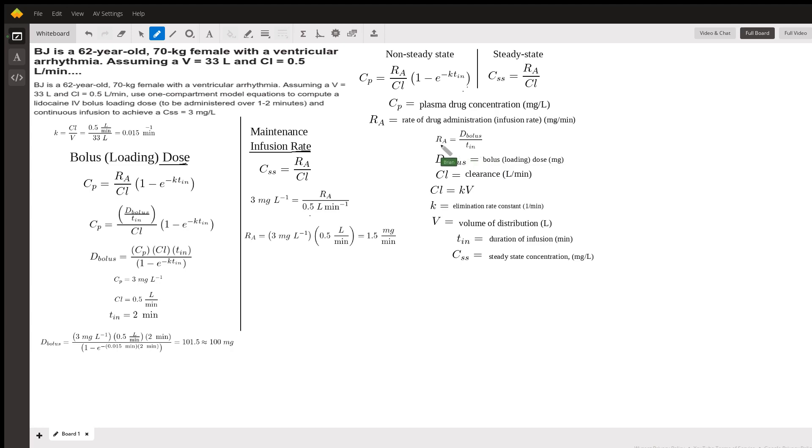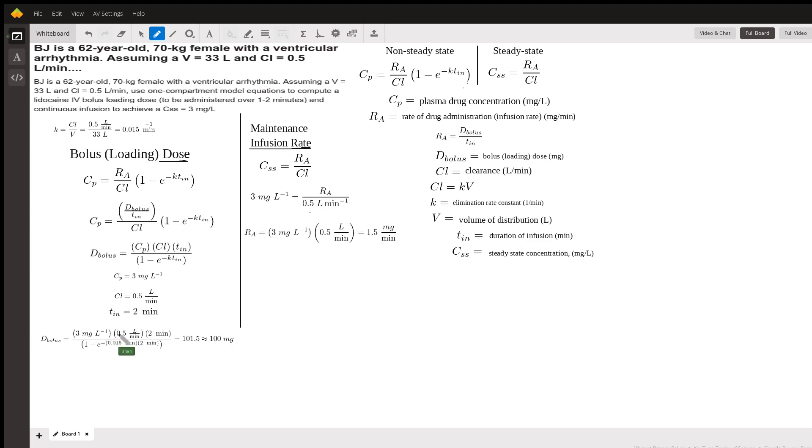So the rate of administration is the bolus dose divided by the infusion time. And so basically what I did, all I did here was I just rewrote RA here from this equation. And then I solved for the bolus dose, and I got 100 milligrams. I chose two minutes to be my infusion duration arbitrarily. I could have picked one minute.